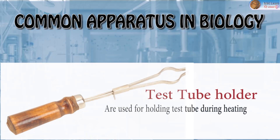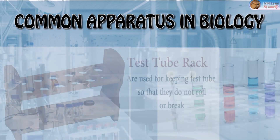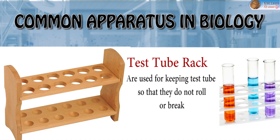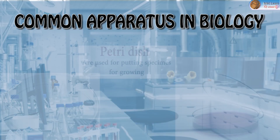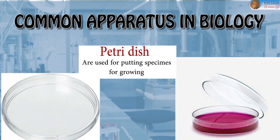Test tube holder: for holding a test tube during heating. Test tube rack: for keeping test tubes so that they don't roll or fall. Test tube brush: for washing test tubes. Petri dish: for putting specimens and for growing cultures.